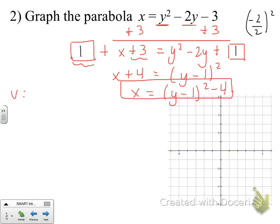The vertex — be careful — the h is on the outside, and we do not change its sign. The k value is the number paired inside the parentheses with y, which is positive 1. So our vertex is at (-4, 1). I also recognize that because x is the isolated variable, the parabola is going to open horizontally. The a value is positive 1, so the parabola should open to the right.